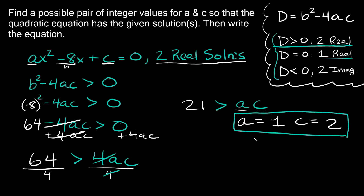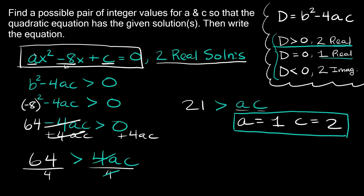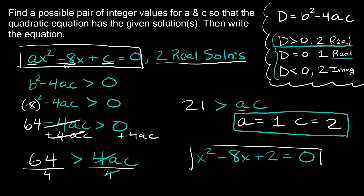Those are our solutions. The last thing we have to do is write the equation with our solutions plugged back into our original equation. We plug in 1 for a and 2 for c, so our final equation is x squared minus 8x plus 2 is equal to zero.